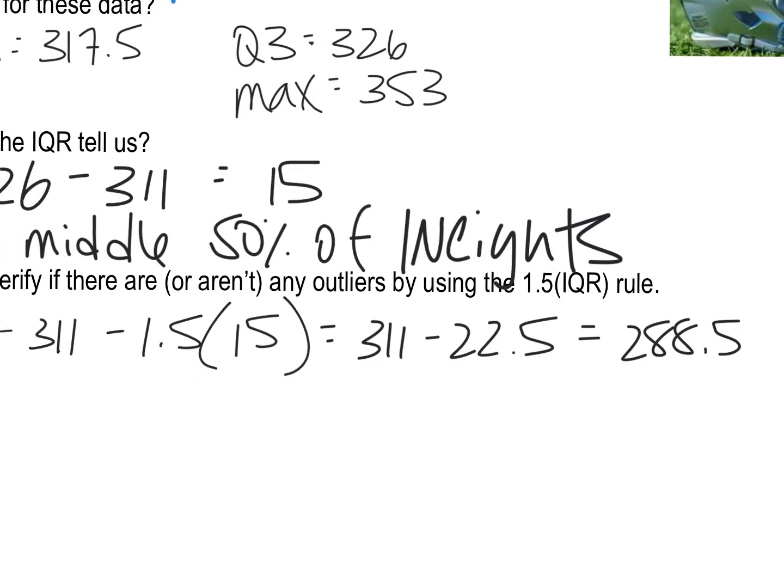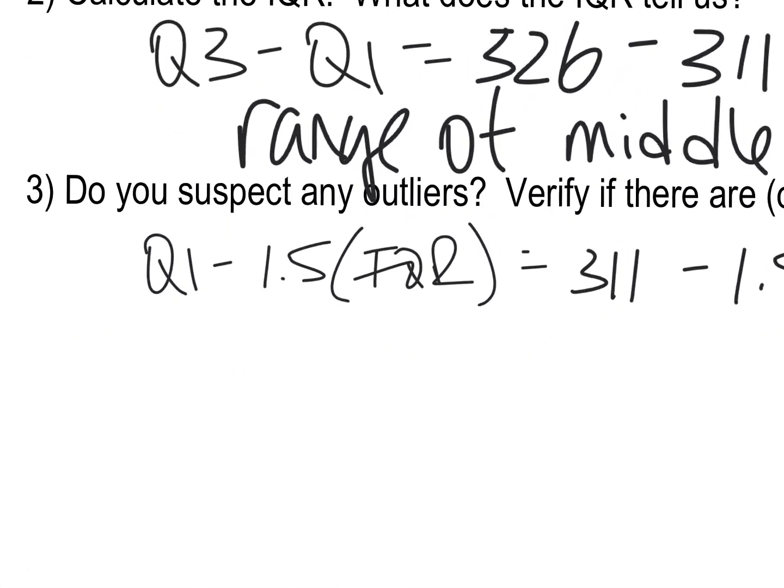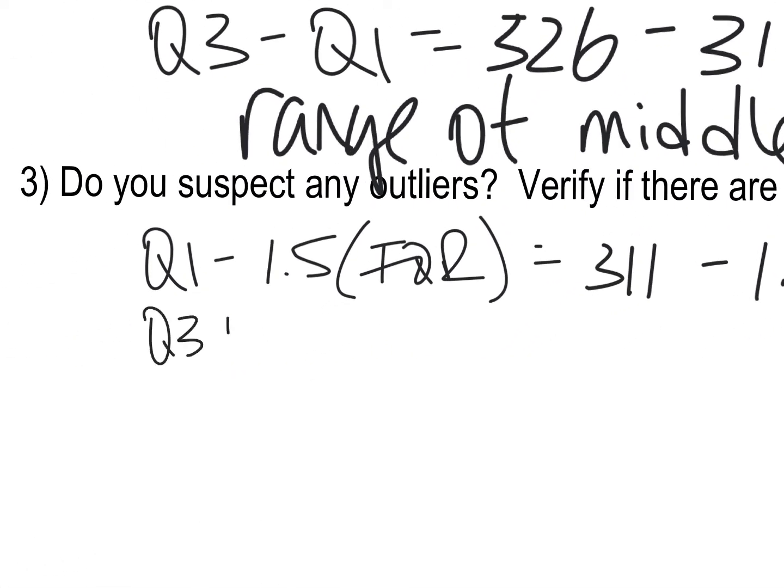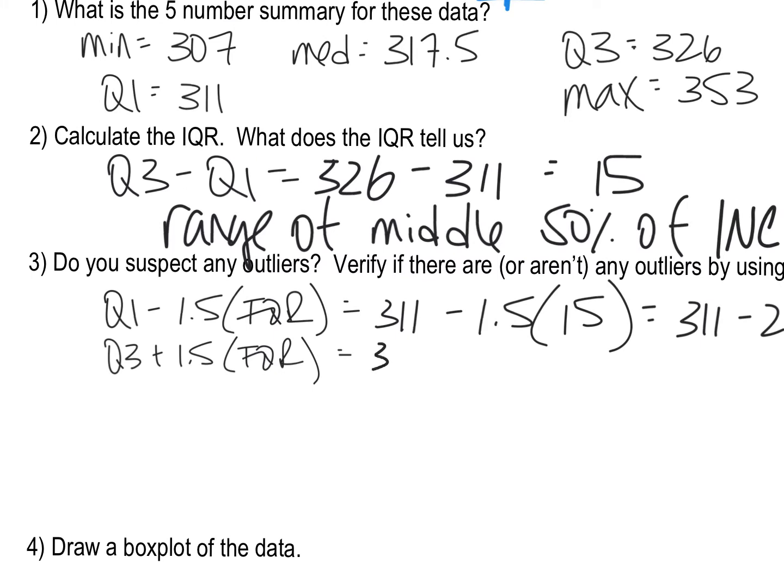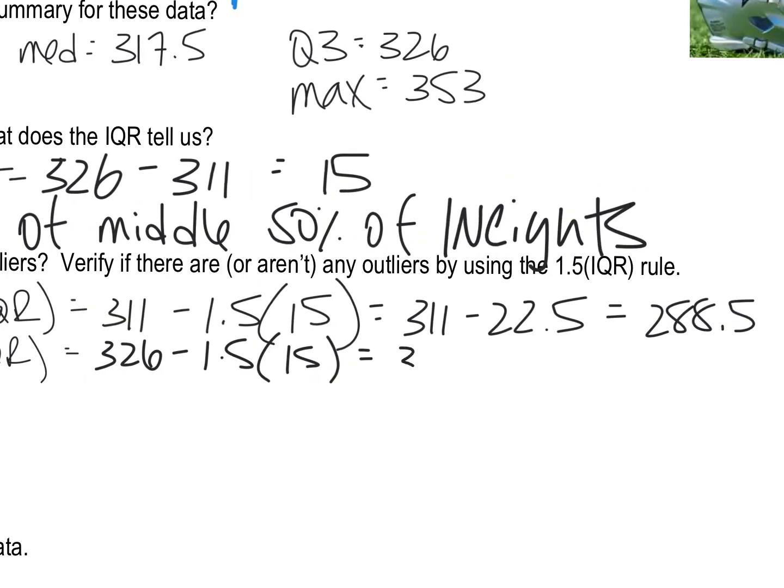And so the very similar formula for the upper fence, but that's going to be Q3 plus one and a half times the IQR. So again, I'm going to plug in those numbers. Remember my Q3 was 326 minus one and a half times 15. And that's going to give me 326 plus 22.5, which gives me 348 and a half.